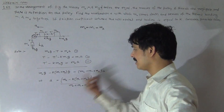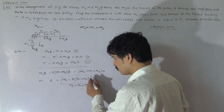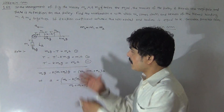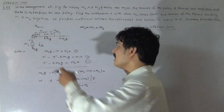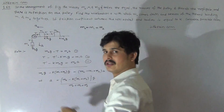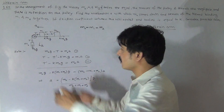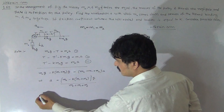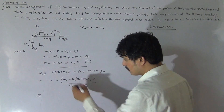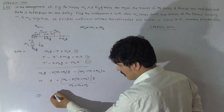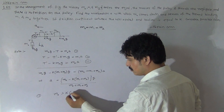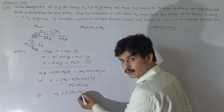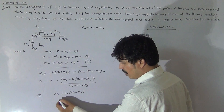Looking at the numerator, if K(M1 plus M2) is greater than M0, the acceleration is negative. But physically, this has no meaning because it is impossible for the hanging block to move upward — there is no upward driving force. The only force acting on the system is M0g acting downward. So the condition for the system to be in motion is that M0 must be greater than K times (M1 plus M2). Since all masses are equal, this becomes M greater than K times 2M, so one-half must be greater than K.